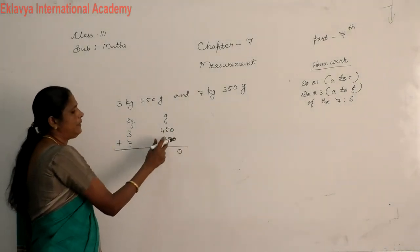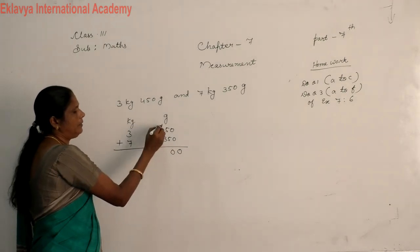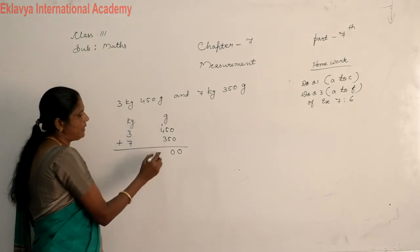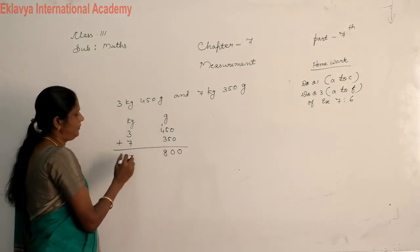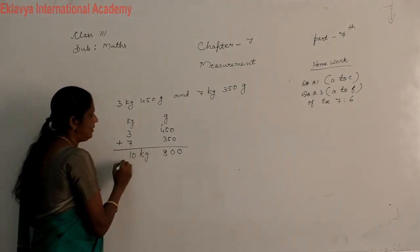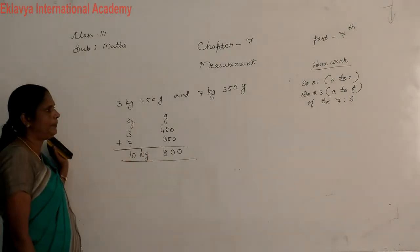5 plus 5, 10, carrying 1. Then 4 plus 3, 7. 7 plus 1, 8. Then 3 plus 7, 10. Then, 10 kg, 800 gram.